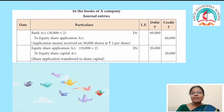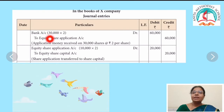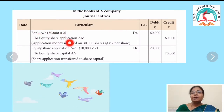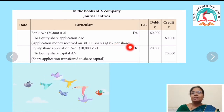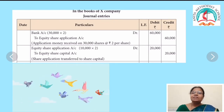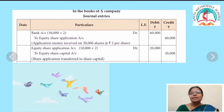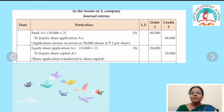Now what is the first step? You have to write the format: in the books of X Company, journal entries — date, particulars, ledger folio, debit, credit. The first journal entry is for receiving the application money. How many applications were received? 30,000. Bank account debit: 30,000 at the rate of rupees 2 — to equity share application account: 60,000. Application money received on 30,000 shares at the rate of rupees 2 per share. The next entry transfers to share capital — only 10,000 shares. Equity share application: 10,000 at the rate of 2 — to equity share capital account: 20,000. Share application transferred to share capital.